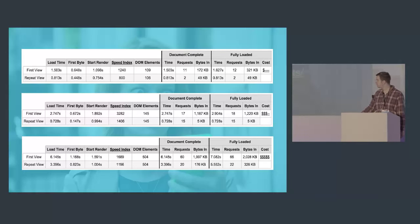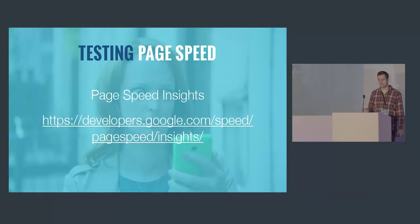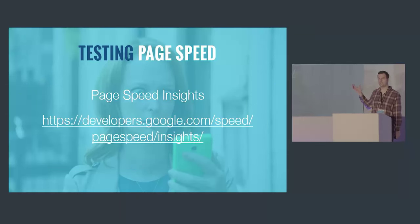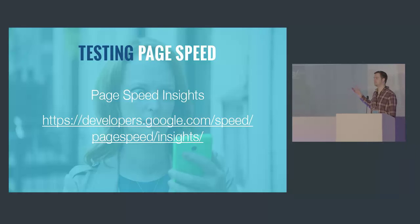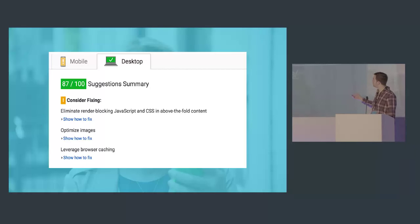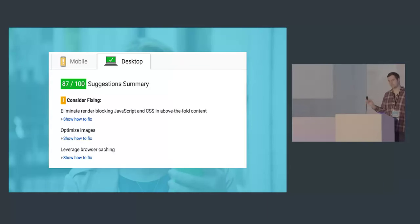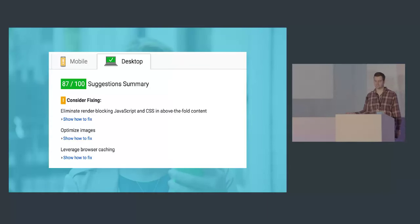We've also got Google's Page Speed Insights — you simply go to that URL, enter your site's URL, and it will give you a summary of the good and bad parts of your site along with suggestions on how to fix things.